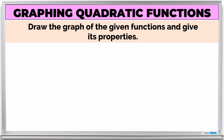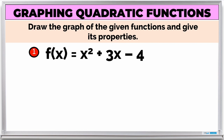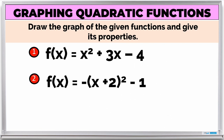You have now learned how to graph quadratic functions and identify their properties. For more practice, it's your turn to graph these functions: f(x) = x² + 3x - 4, and f(x) = -(x + 2)² - 1. Graph each one and find the vertex, axis of symmetry, domain, range, and the direction of the opening.